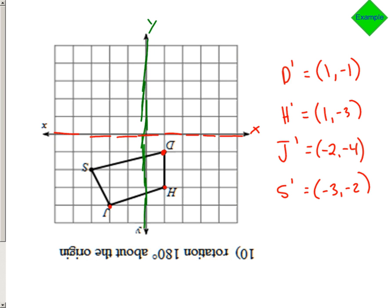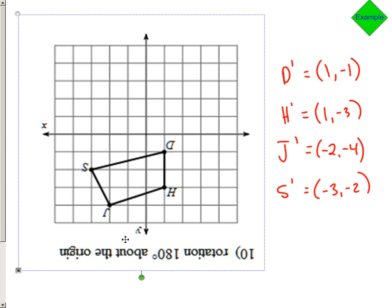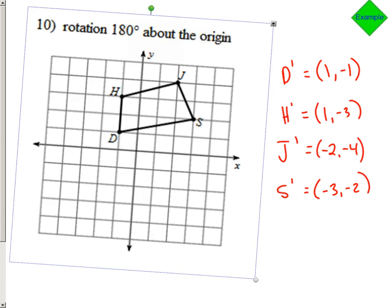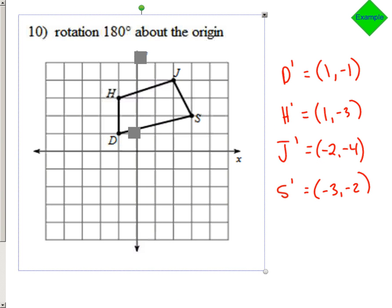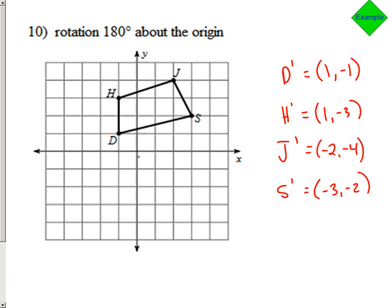And the great thing about this is that after you've turned your paper and you made your list of where these points will be moving to, you can then turn your paper back to the original orientation you had it, and look at your list to plot the new points. So D is at 1, negative 1, right? Here. So that's D prime. H is at 1, negative 3. H prime is at 1, negative 3. J prime is at negative 2, negative 4. So let's call this J prime. And S prime is at negative 3, negative 2.